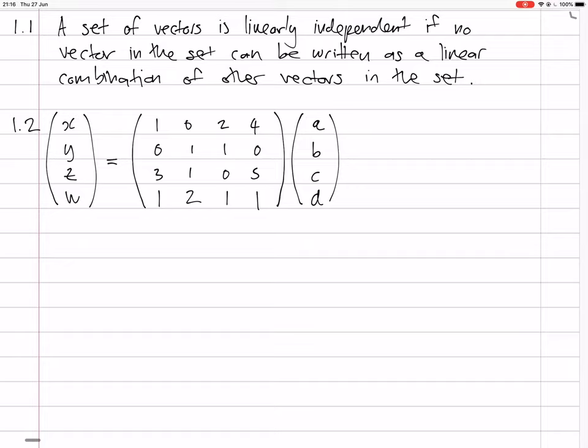So now we need to Gauss reduce. And I'm trying to get one of the rows to zero. So we start off maybe with row 3 minus 3 times row 1, and row 4 minus row 1. So that'll give us x and y stay the same, and we have z minus 3x and w minus x. And here we have 1, 0, 2, 4, just the same, 0, 1, 1, 0, just the same, then we have 0, 1, so 0 minus 6, 5 minus 12, which is minus 7, and here in the fourth row we have 0, 2, and then 1 minus 2 is minus 1, 1 minus 4 is minus 3.